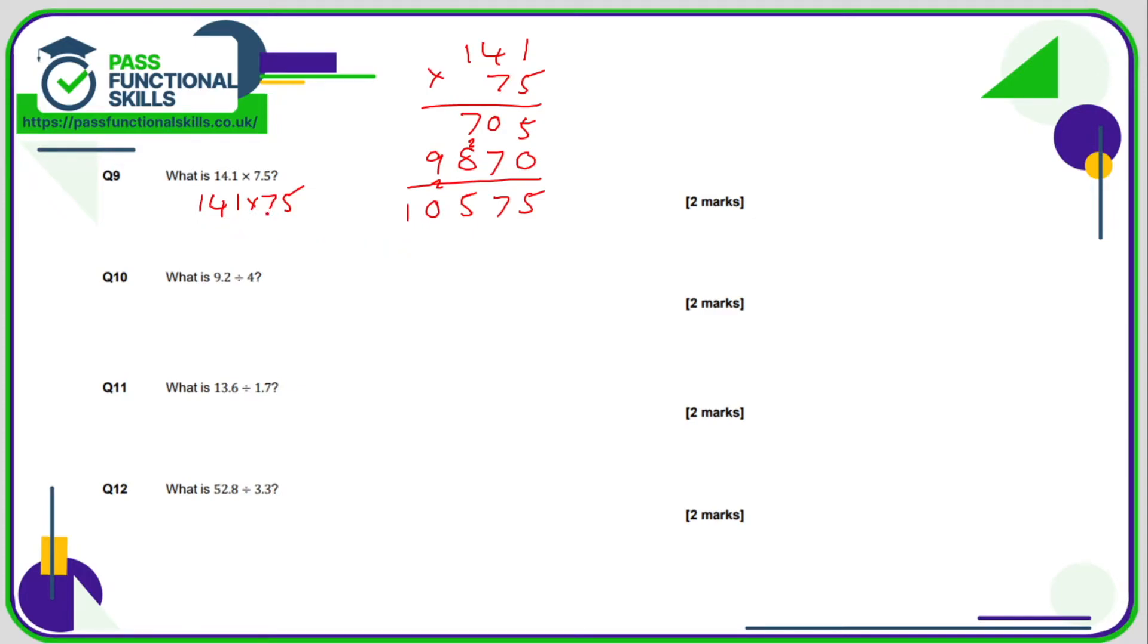So 141 times 75 is 10,575, but we want 14.1 multiplied by 7.5. Now, we just need to count up the number of decimal places in the question. Well, there's one digit after the decimal point in 14.1 and one digit after the decimal point in 7.5. So in total, we have two decimal places. So therefore, we need to create two decimal places in our answer. So the answer is 105.75.